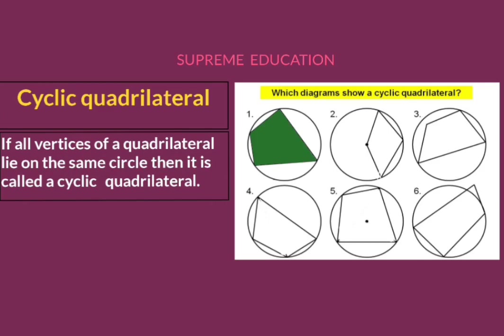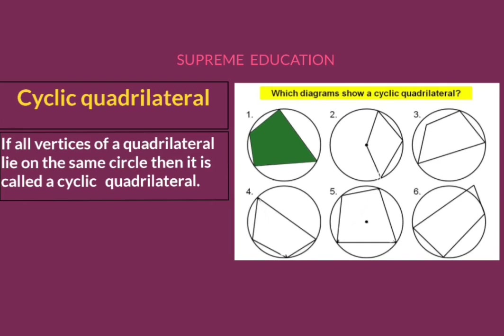In diagram number one, all four vertices of the quadrilateral lie on the same circle, therefore this quadrilateral is a cyclic quadrilateral. In diagram number two, only three vertices lie on the circle and the fourth one is at the center of that circle, meaning that fourth vertex doesn't lie on the circle. Hence this one is not a cyclic quadrilateral.